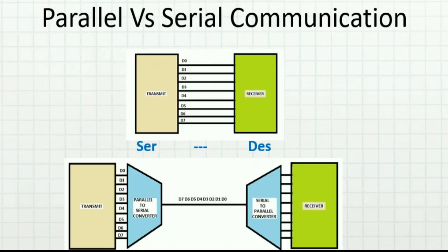Parallel versus serial communication. In a parallel transmitter and receiver, we have 8-bit data D0 to D7. This 8-bit data — it can be any number of bits, 4-bit, 8 to 16, whatever — is transferred from the transmitter to the receiver.